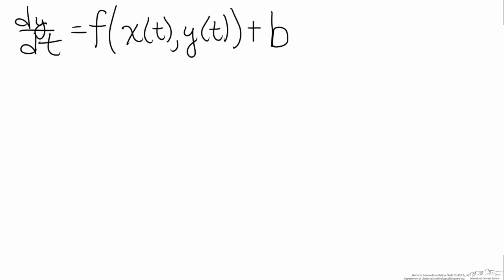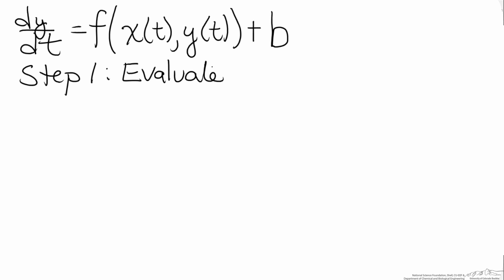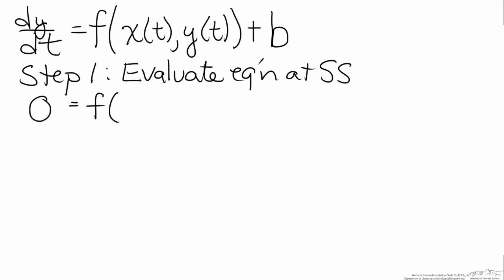In order to put this into deviation variable form, we follow a set method. Step one is to evaluate the differential equation at steady state. When we do that, the derivative term will go to zero, and our function will now be evaluated at x-bar and y-bar, plus b. The constant b hasn't changed, because whether we are at steady state or not, that value is not changing.